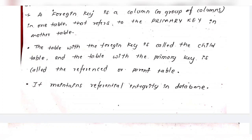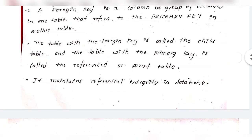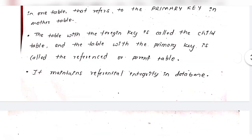For example, consider a student table referencing a class table — a student belongs to a class, so the student table references the class table's primary key. The foreign key maintains referential integrity in the database.